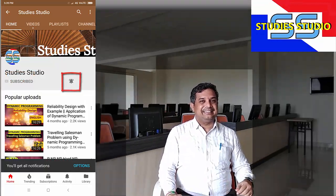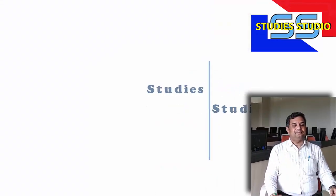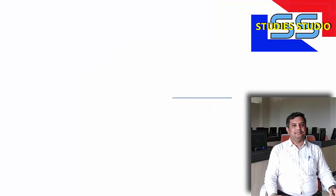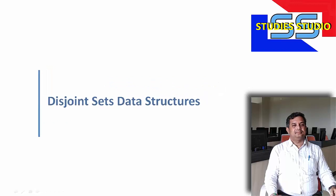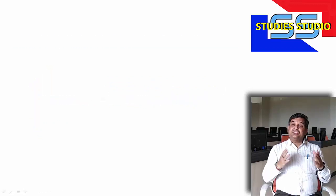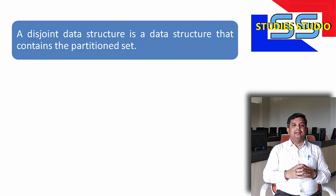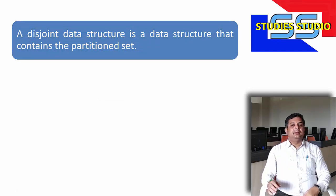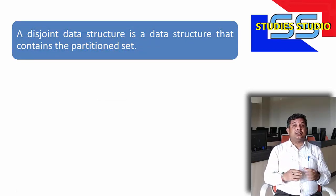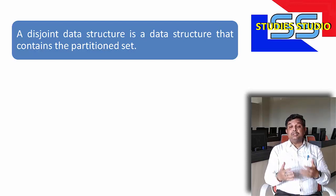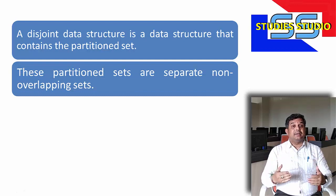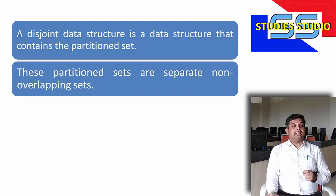So, let us start. Disjoint set is yet another method for solving problems. Basically, disjoint set data structure is a data structure that contains the partition set, and these partition sets are separate and non-overlapping sets.